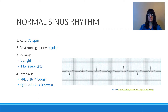Looking at normal sinus rhythm, the rules we always have to apply are these four: looking at the rate, the rhythm regularity, the P waves — are they upright and is there one for every QRS — and then the intervals, knowing that the PRI needs to be 0.12 to 0.20, and the QRS complex needs to be less than 0.12, which is less than three boxes.